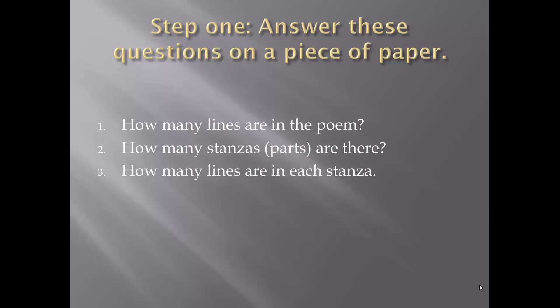Number 1: How many lines are in the poem? Look at your poem and count them. Number 2: How many stanzas or parts are there? A stanza is like a paragraph or a different part — it's when the subject or topic changes slightly. Number 3: How many lines are there in each stanza that you see? Count them and write it down.